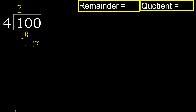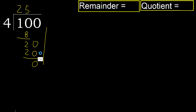Next: bring down 20. 4 multiplied by 5 is 20 — is not greater. Subtract 0. Next, that is not a number, therefore finish it.